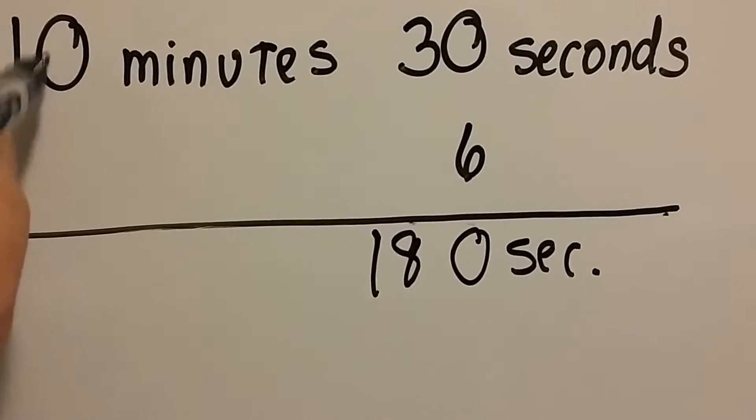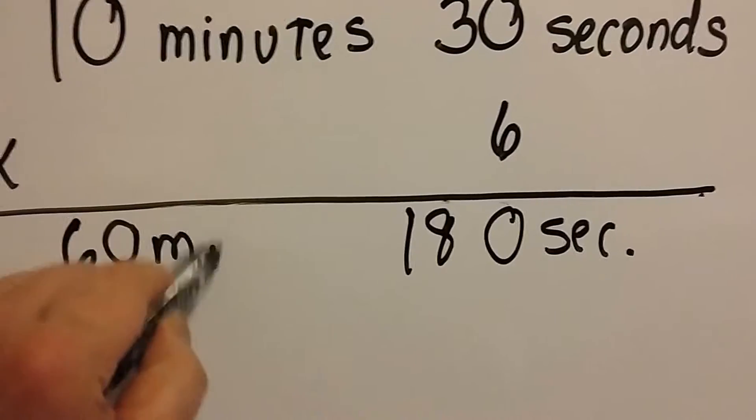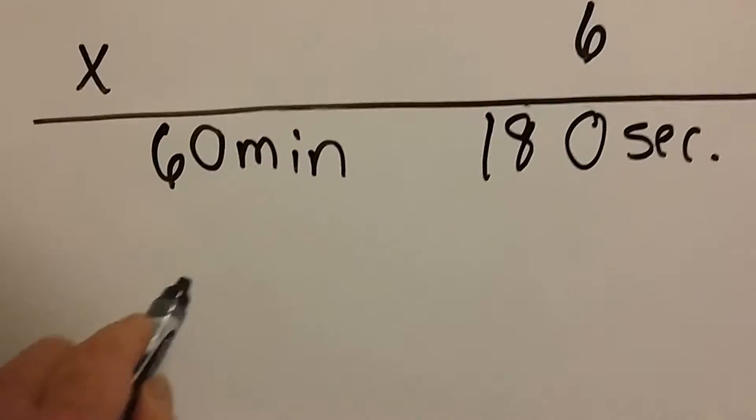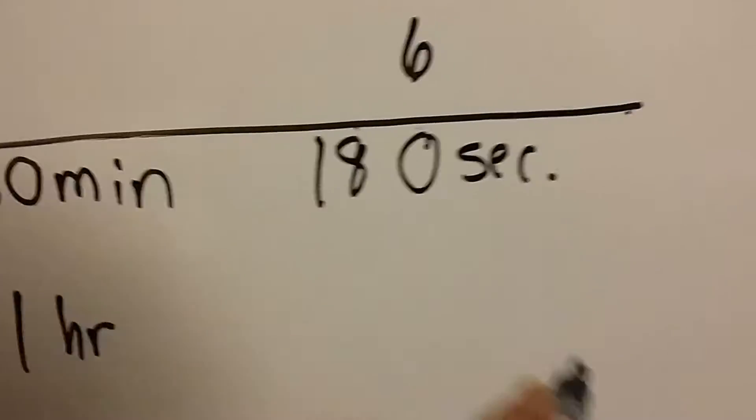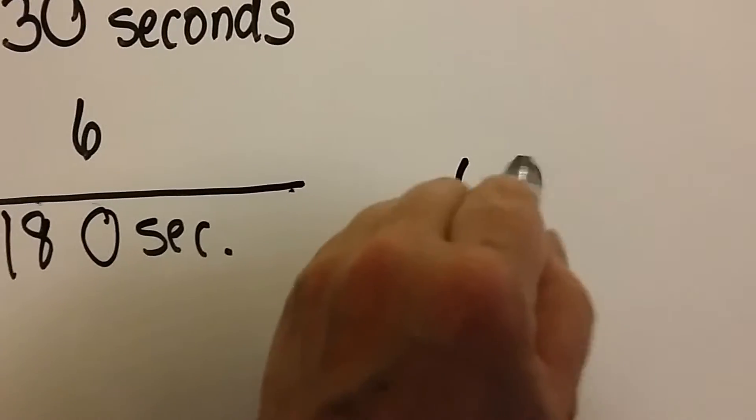6 times 10 is 60. 60 minutes is 1 hour, and 180 seconds, well aren't there 60 seconds in each minute?